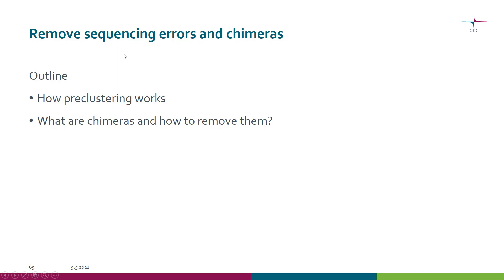By now we have filtered our aligned sequences and trimmed the sequence alignment. We still have a little bit of cleaning to do before we can proceed to classification. In this tutorial we look at how to remove sequencing errors and chimeras.